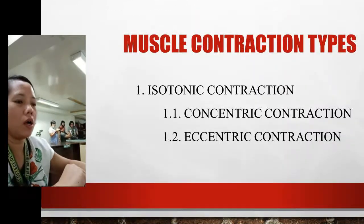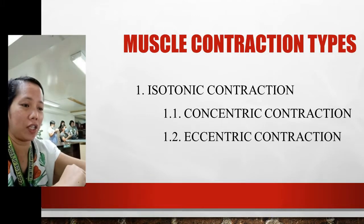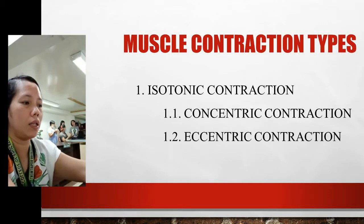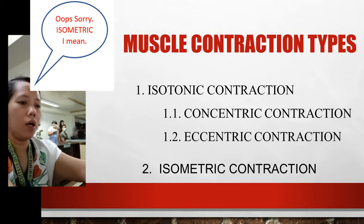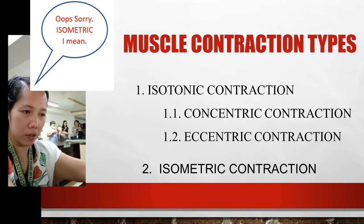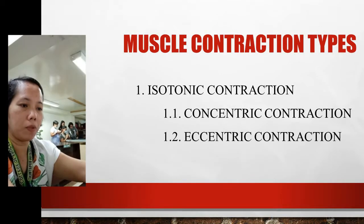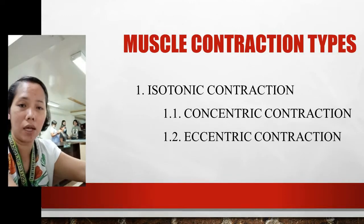Now there are two types of muscle contraction. Number one is isotonic and number two is isometric contraction. Under isotonic, we have two subtypes: concentric contraction and eccentric contraction.